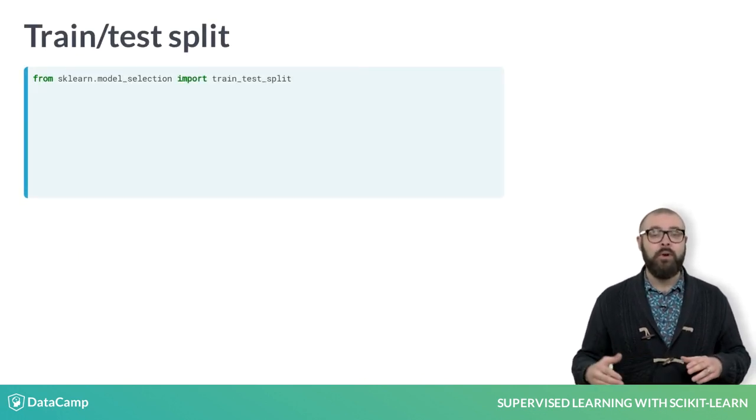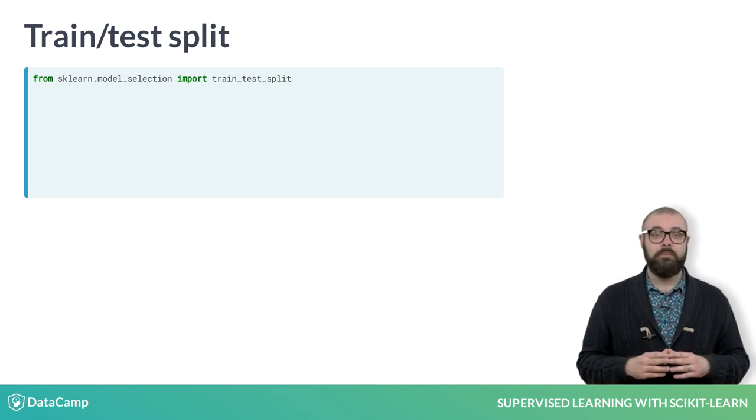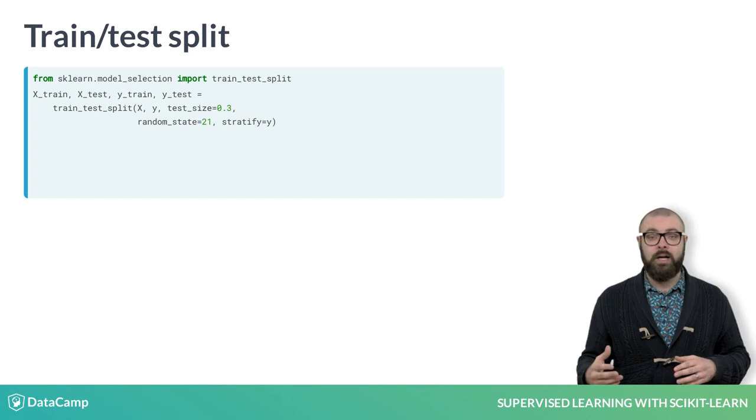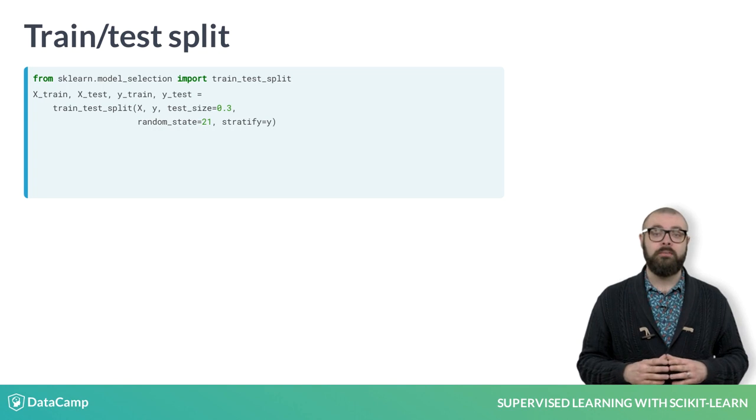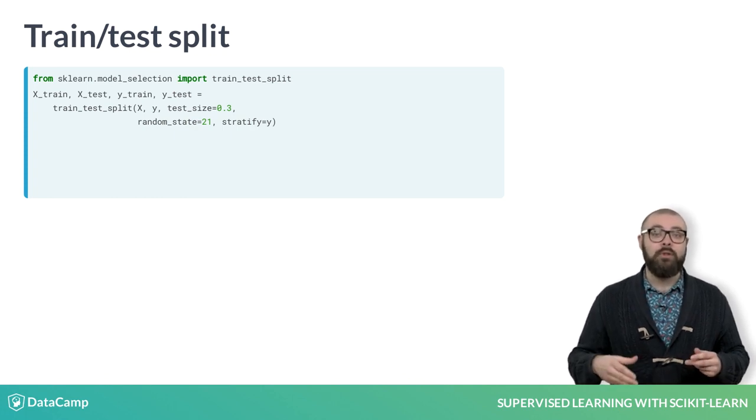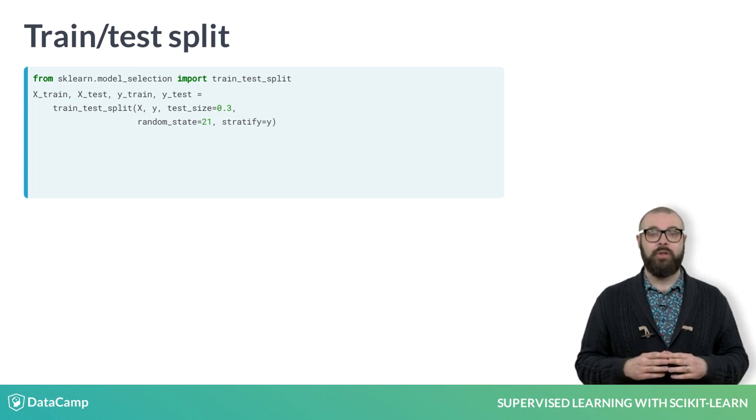To do this, we first import train_test_split from sklearn.model_selection. We then use the train_test_split function to randomly split our data. The first argument will be the feature data. The second, the targets or labels. The test_size keyword argument specifies what proportion of the original data is used for the test set. Lastly, the random_state flag sets a seed for the random number generator that splits the data into train and test. Setting the seed with the same argument later will allow you to reproduce the exact split and your downstream results.